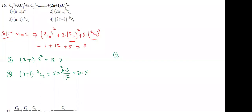Now verify the third option: (2+1) into 2nCn, that is 4C2. 2n+1 means 3, and 4C2 — we already calculated that is 6. 6 times 3 is 18. So this is the correct answer.